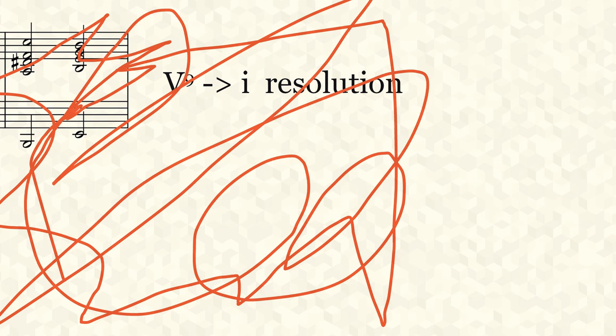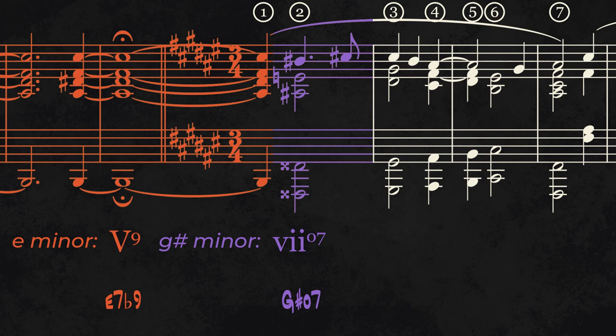Liszt sneakily travels to the diminished 7th chord of G sharp minor.